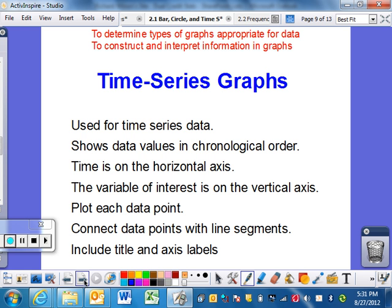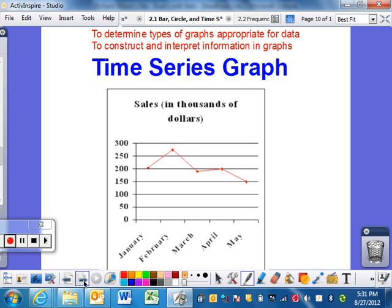And then, i.e., again, include a title and labels. I want to be able to look at it and know exactly what's going on. Here's an example of a time series graph. So this is the sales in thousands of dollars. Notice in January, February, March, April. And then you connect your dots. So that's pretty easy to do. Nothing totally new, I'm going to guess.